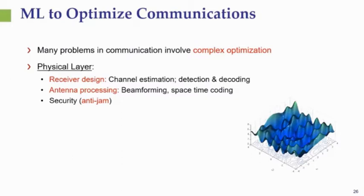Another good example is multiple antenna systems, where there are many design issues related to beamforming in both the transmitter and receiver sides, which again lead to various combinatorial problems, especially when we consider antenna selection methods, and they again require knowledge of the channel statistics.